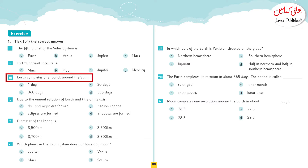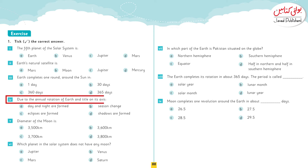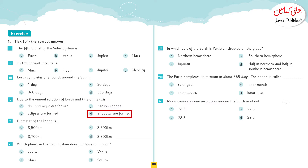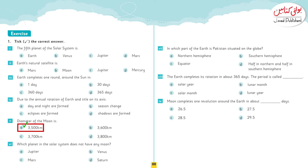Earth completes one round around the sun in — one day, 30 days, 360 days, or 365 days? The answer is 365 days. Due to the annual rotation of earth on its axis, day and night are formed, seasons change, eclipses are formed, and shadows are formed. The correct option is season change. The diameter of the Moon is 3500, 3600, 3700, or 3800 kilometers? The correct option is 3500 kilometers.